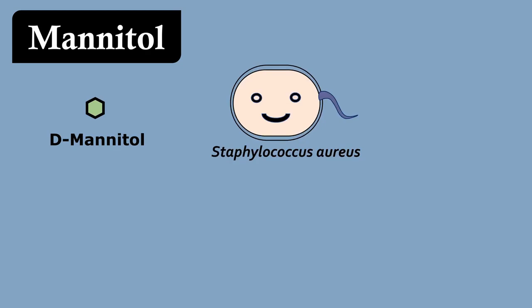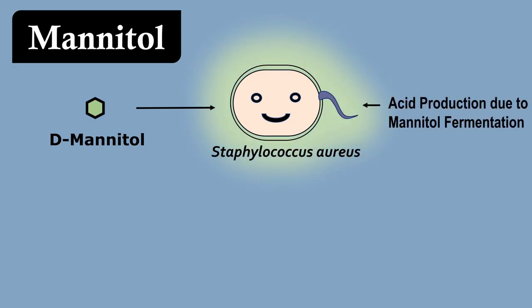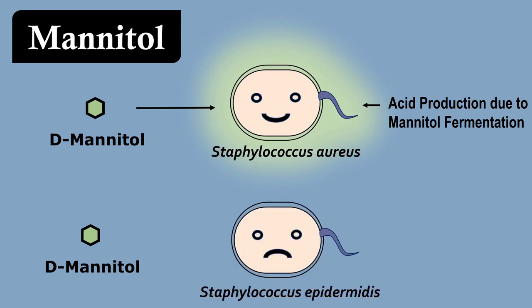Mannitol is a fermentable carbohydrate source for some species of Staphylococci, such as Staphylococcus aureus. During fermentation, the bacteria use mannitol as an energy source and produce acidic byproducts, which decrease the pH of the medium surrounding the bacterial colony. However, certain species of Staphylococci, like Staphylococcus epidermis, are not able to utilize mannitol as an energy source, because they lack certain enzymes for the mannitol utilization pathway. Therefore, there is no fermentation of mannitol by these species, and hence no acid production, resulting in no change in the pH of the medium surrounding the bacterial colony.